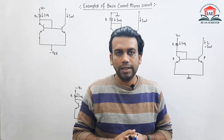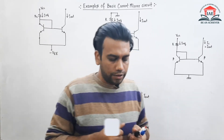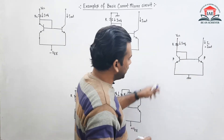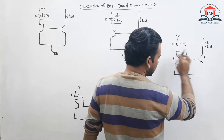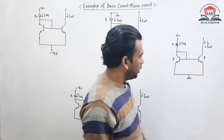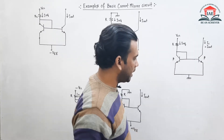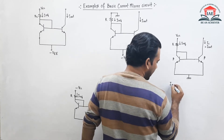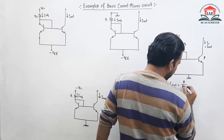Hello students, welcome to IAE. In this video we are going to discuss some examples on basic current mirror circuits. Let's take the first example, example number one. A basic current mirror circuit has been given and both transistors are matched. We need to find the value of I out. The general equation for I out can be written as beta divided by beta plus 2, into the I reference.